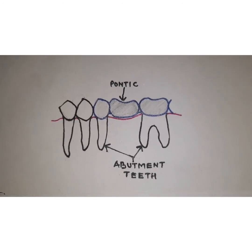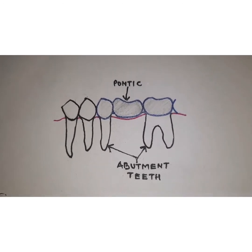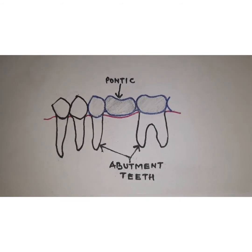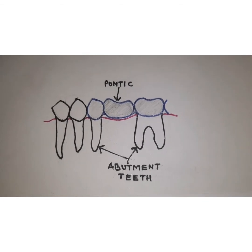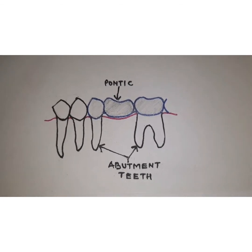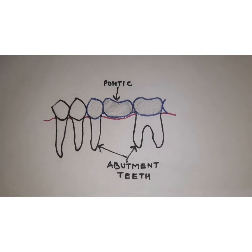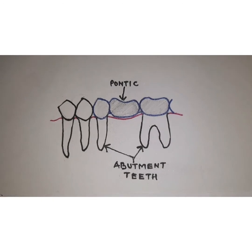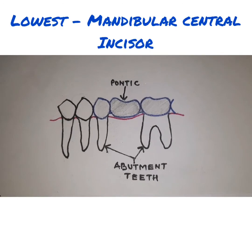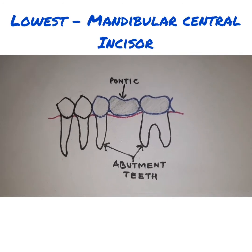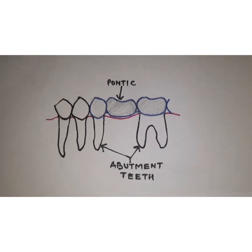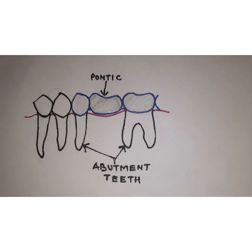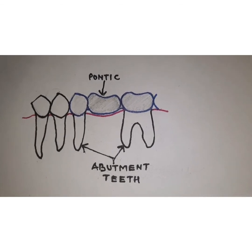If we talk about the anterior teeth, the maxillary canines had a root surface area of 273 mm², which was followed by the mandibular canine which was 268 mm². If we see the least average root surface area of a tooth, it was the lower central incisor at only 154 mm². These are average root surface area readings given by A. Jepsen.